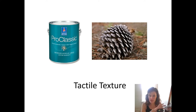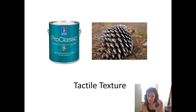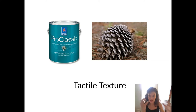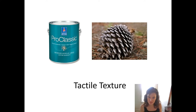If a surface were smooth it would be evenly lit across. If it were round, it would look more like a ball — with a highlight in one section, gradually getting darker toward the other side. But with a pine cone it's light, dark, light, dark, light, dark — and that's how we know it has texture. We know what kind of texture it has without even touching it.